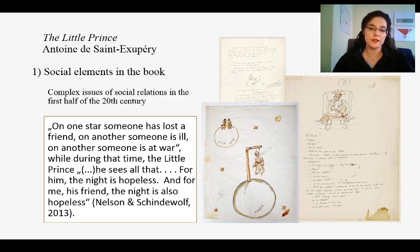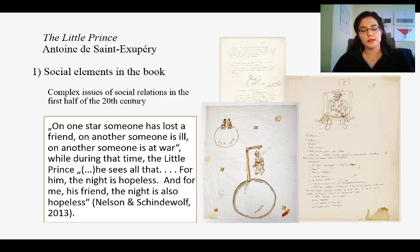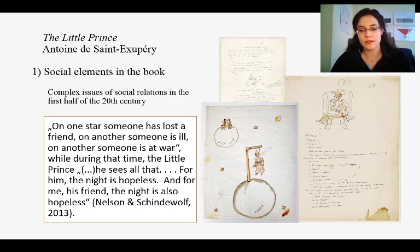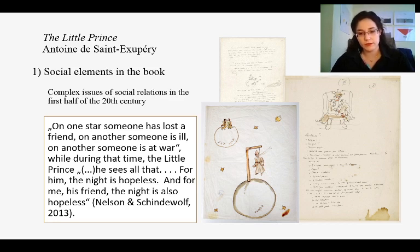The author's indignation with social reality is evidenced by parts of the text from the original manuscript that were never published: 'On one star someone has lost a friend, on another someone is ill, on another someone is at war, while during that time The Little Prince sees all that — for him the night is hopeless, and for me, his friend, the night is also hopeless.' So what is common between wartime and its consequences with the state of society today?